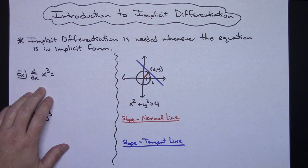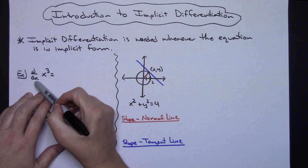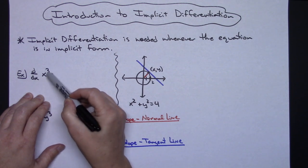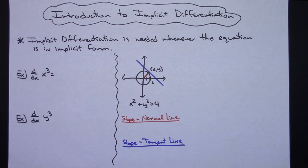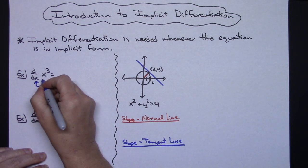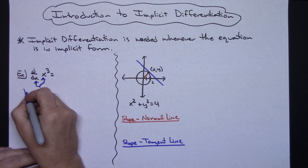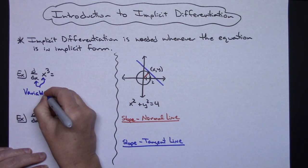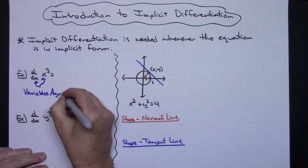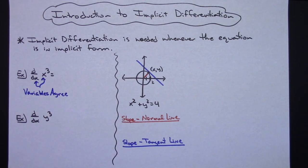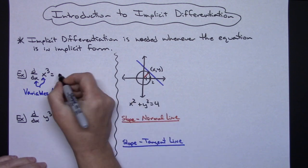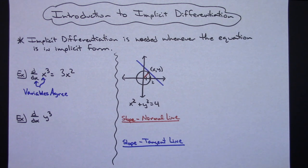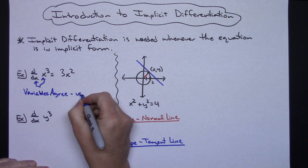Let's say I'm taking the derivative of a plain x to the third — I am taking the derivative of an x. My variables agree because I'm taking the derivative with respect to x. Variables agree, which means I can just use plain ordinary power rule. So the derivative here is going to be 3x squared — use simple power rule.